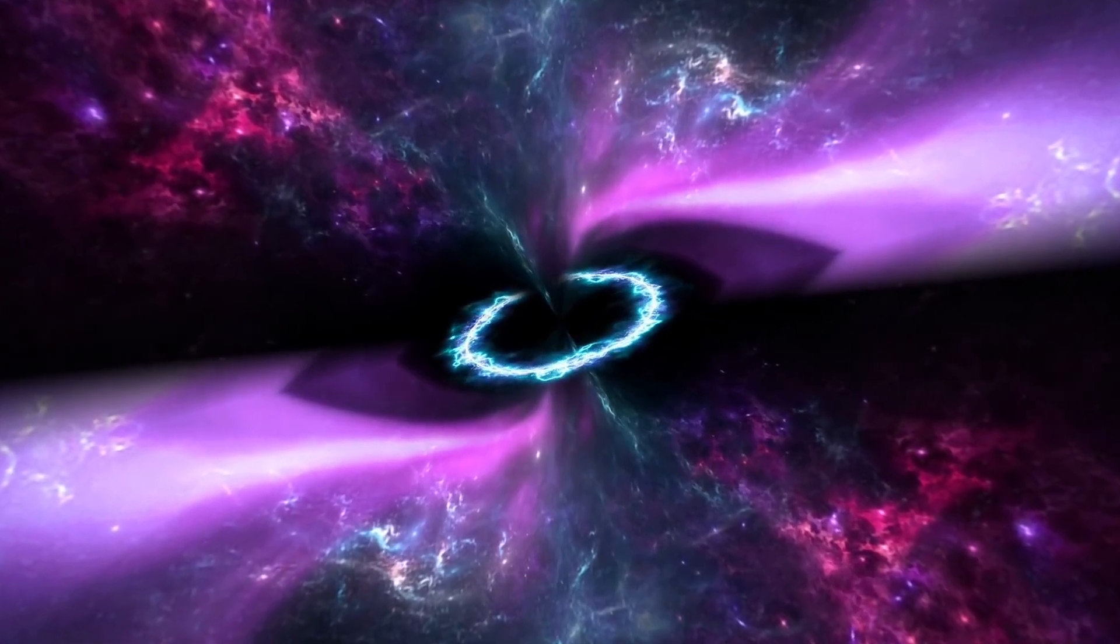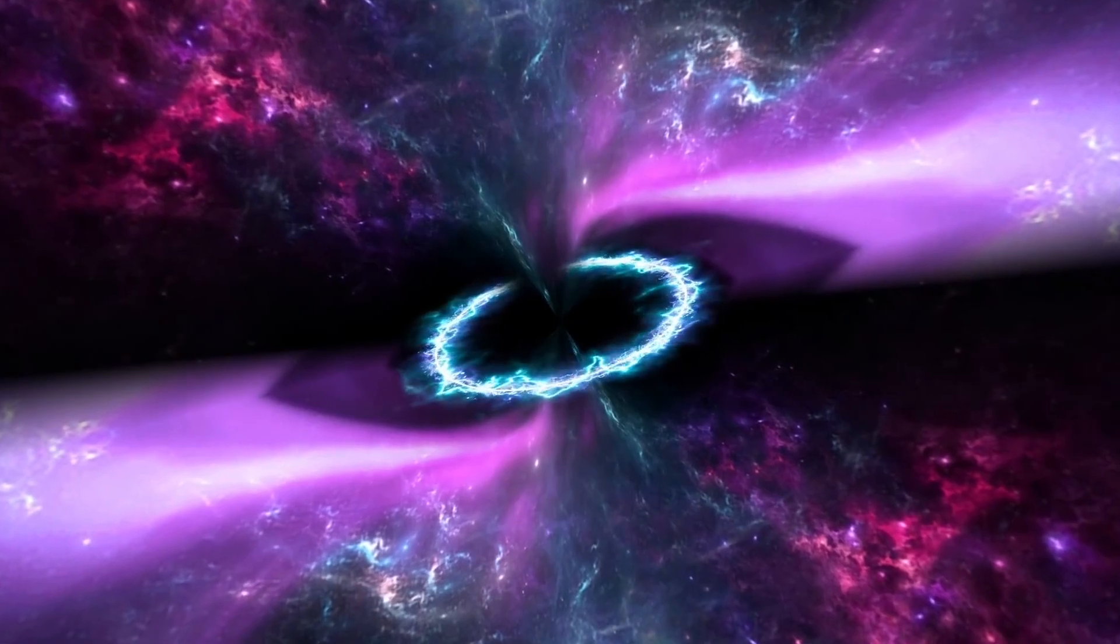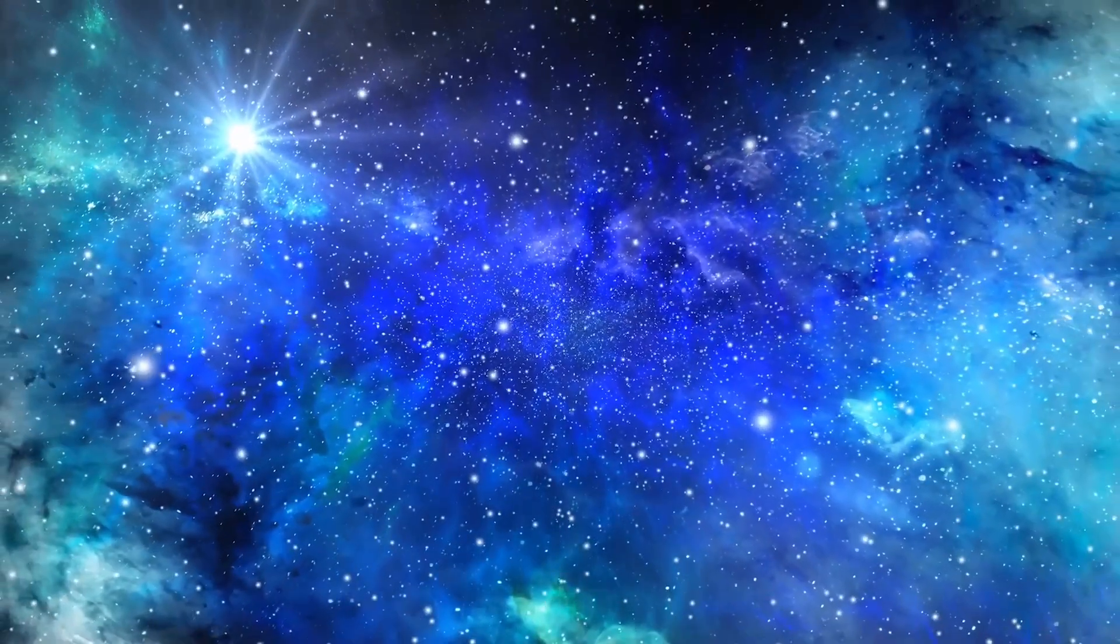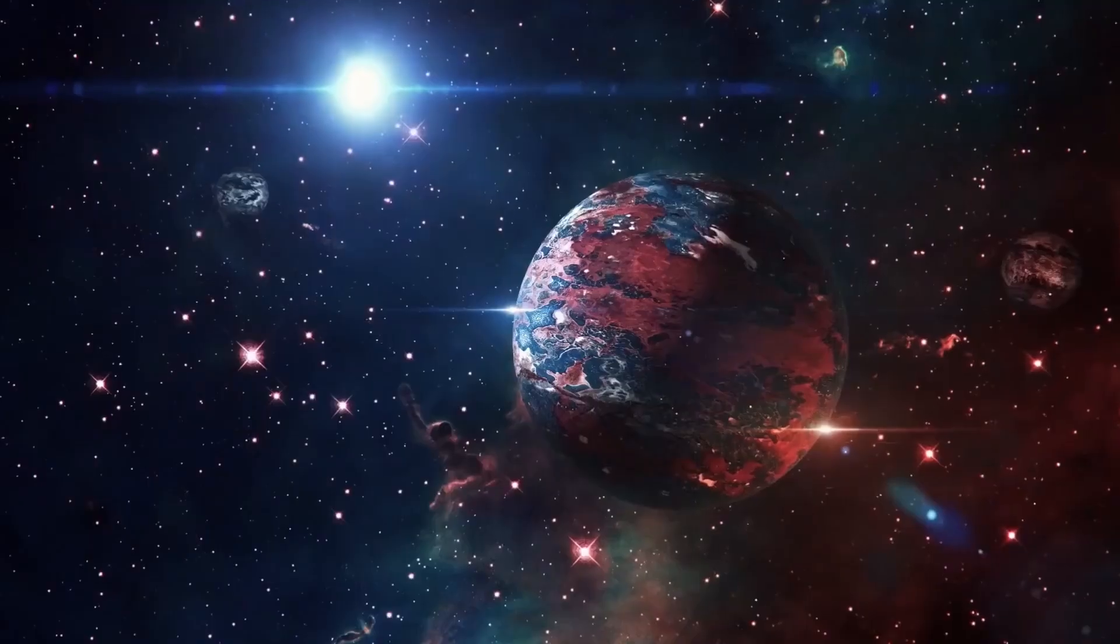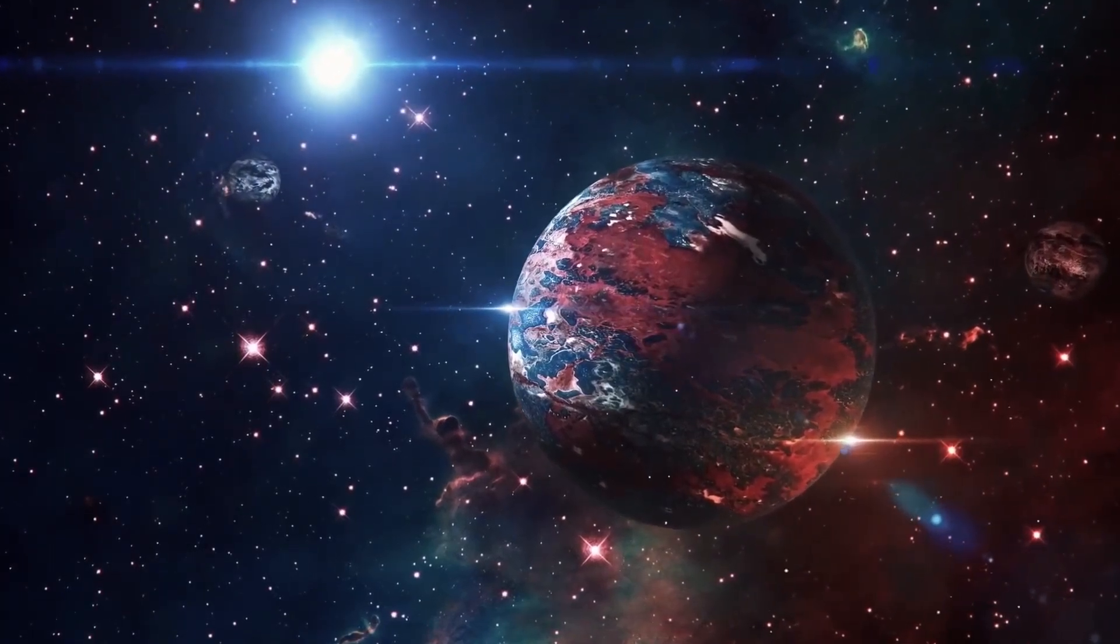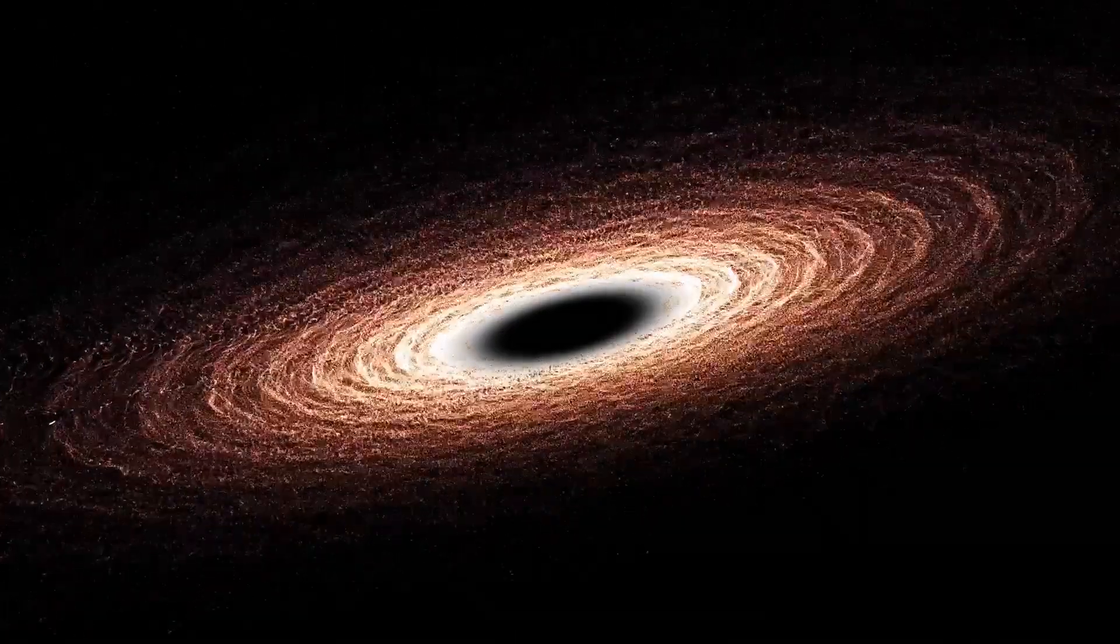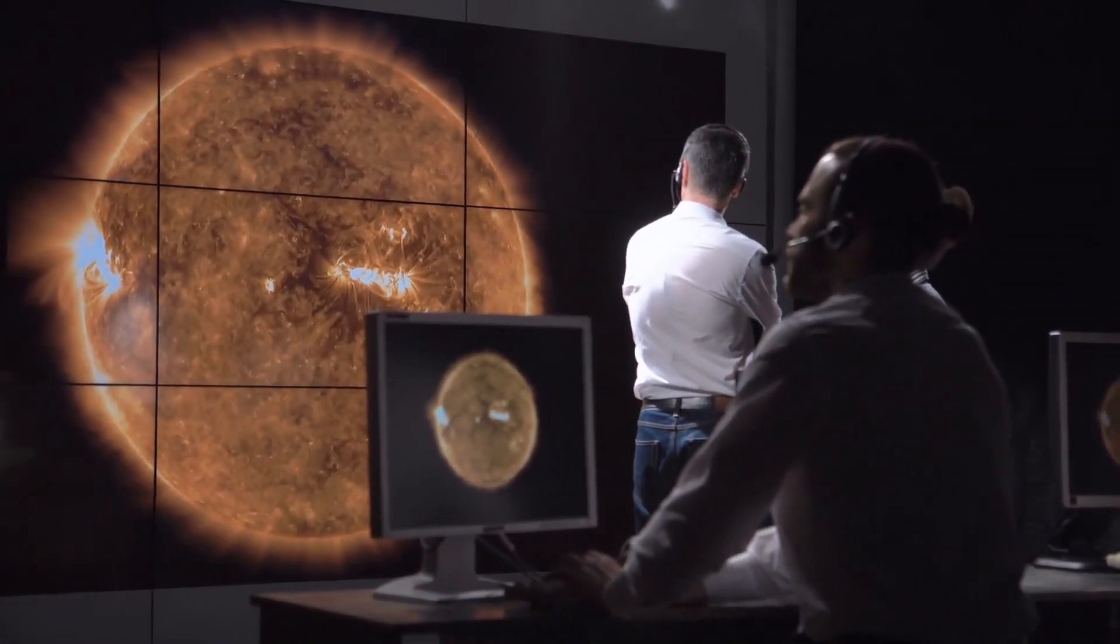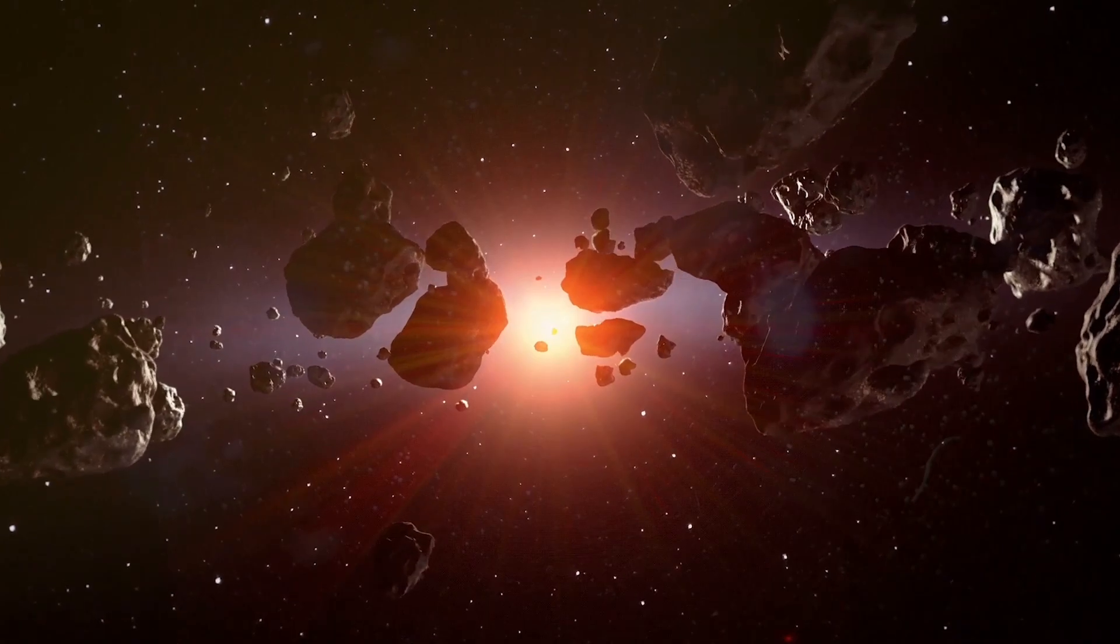But some researchers think there may be merit to this idea, saying there are similarities between what they see happening within our solar system and what they believe could be happening on larger scales across the cosmos. The Cyclic Model says the universe is created and destroyed in a repeating pattern. The Cyclic Model is Controversial.